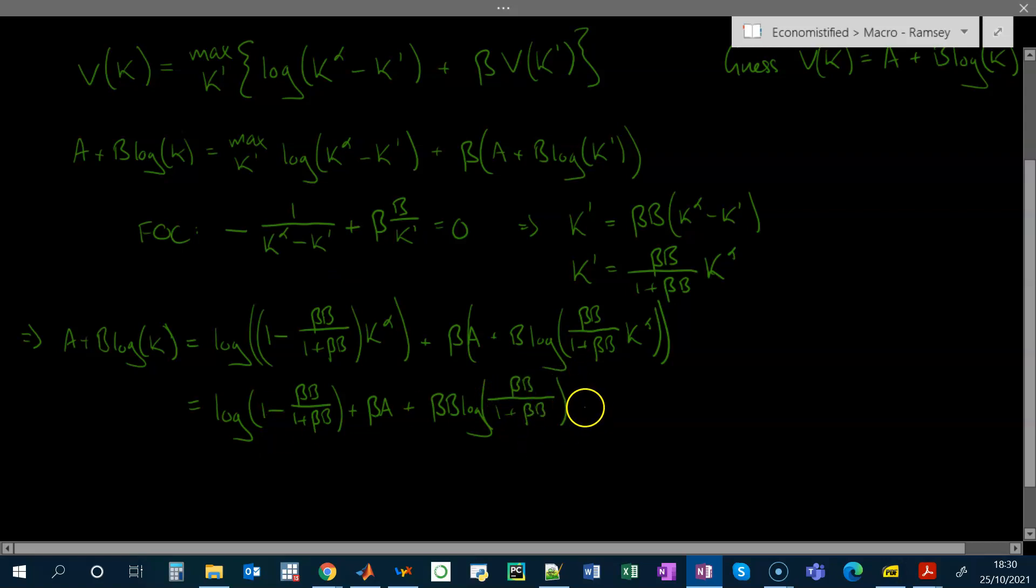But let's just collect all the constant terms and all the terms involving the logarithm of k. So that's the constant term. And if we collect all the terms involving the log of k using the properties of logs, we can take the alpha down here and the alpha down here. Okay, now these two sides of the Bellman equation have exactly the same functional form. This is a constant, and it's going to be equal to a in order to ensure this still holds with equality. And this is going to be equal to b here.